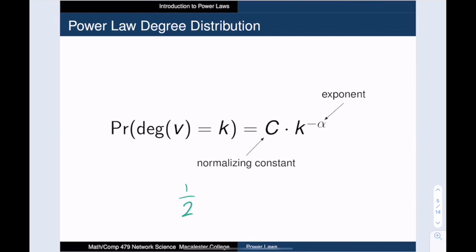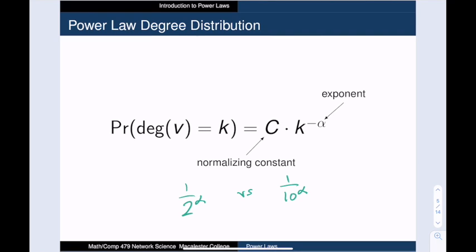Now note that low-degree vertices are much more likely than higher-degree vertices. For example, 1 over 2 to the alpha is going to be much bigger than 1 over 10 to the alpha.